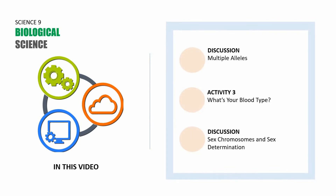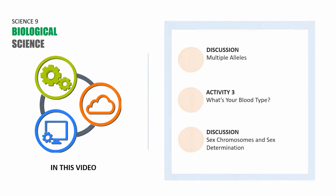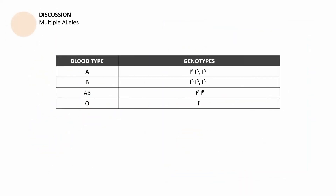This PowerPoint presentation is divided into three parts. The first part is a discussion about multiple alleles. The second part is an activity about blood type entitled 'What's Your Blood Type.' The last part is a discussion about sex chromosomes and sex determination.